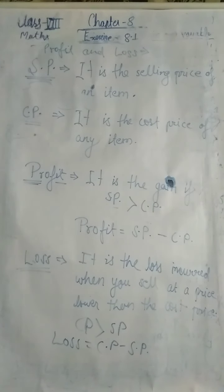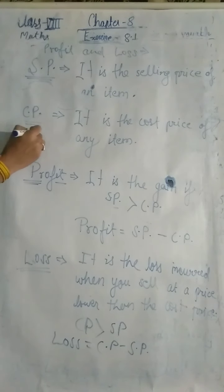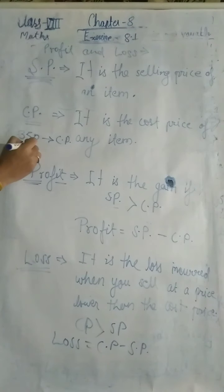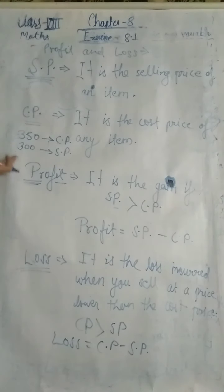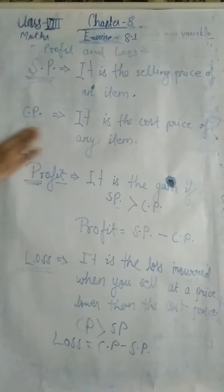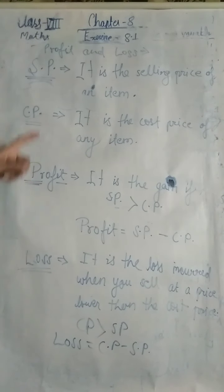For example, if you bought a book for 350 rupees and sold it for 300 rupees, you incurred a loss because you sold it for less than you paid. The loss is 350 minus 300 equals 50 rupees. Learn the formulas from page number 118 — that is your homework.